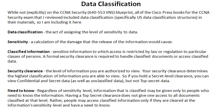If you have privilege level 15, you can see everything. If you have privilege level 7 — and for those who don't know, Cisco privilege levels go from 0 to 15 — you can use all the commands up to privilege level 7: level 6, 5, 4, and so on. Security clearances work the same way — you're given a certain level and have access to information at that level and below.